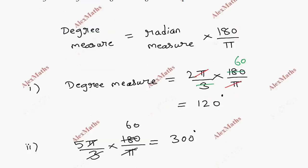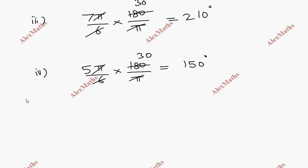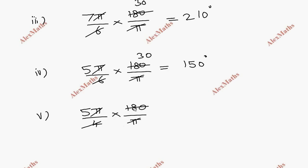Fifth subdivision: 5π/4. So 5π/4 into 180/π. The π cancels. 180 divided by 4 equals 45. Then 5 times 45 equals 225 degrees. So 5π/4 equals 225 degrees. Thank you.